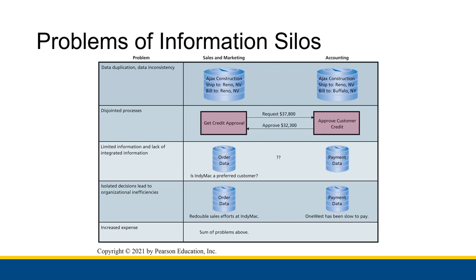Now this disjointed processes example stems from sales and marketing and accounting trying to communicate. Sales and marketing is trying to approve a $20,000 order with a company, and in their database, sales and marketing says that company has a current balance of $17,800. So they are requesting $37,800 of credit in order to help that order go through for the company.